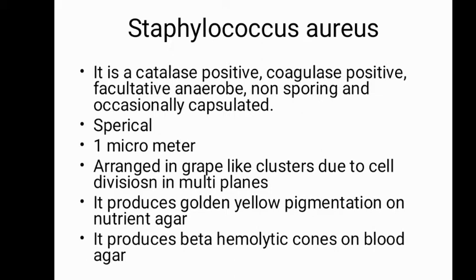Staphylococcus aureus is catalase positive, coagulase positive, and facultatively anaerobic. It is non-motile, non-sporing, and occasionally capsulated. The cells are spherical in shape with a diameter of about one micrometer. Staphylococcus aureus is arranged in grape-like clusters because cell division occurs in multiple planes, with daughter cells remaining close together.